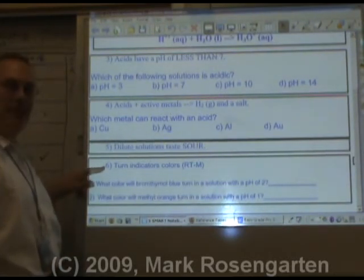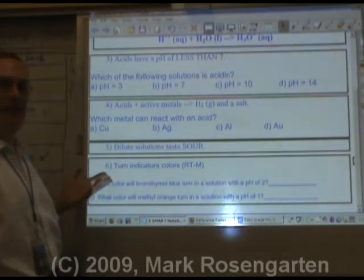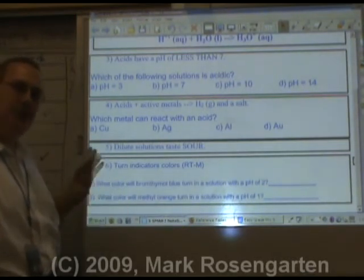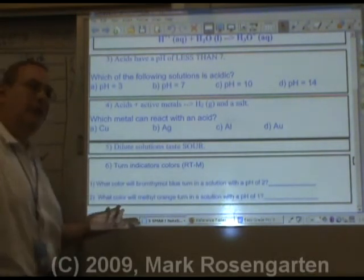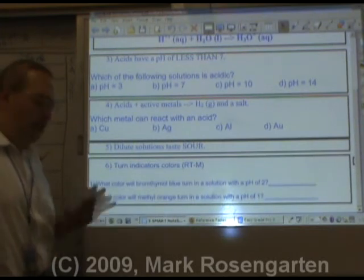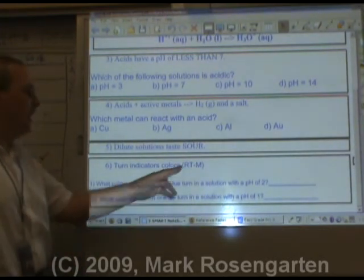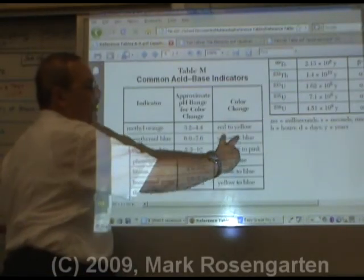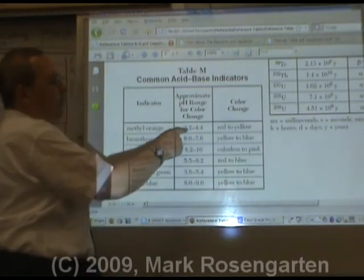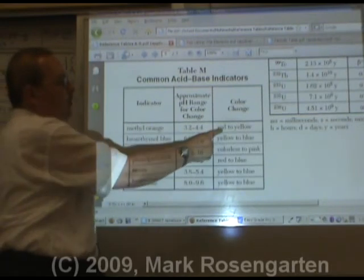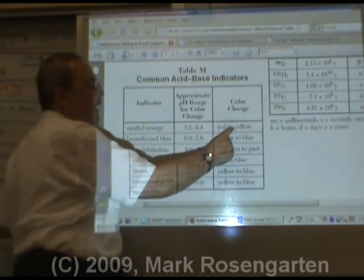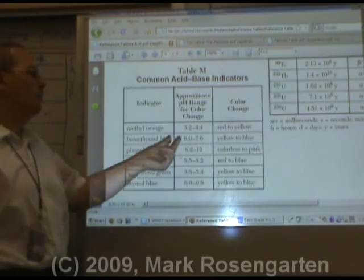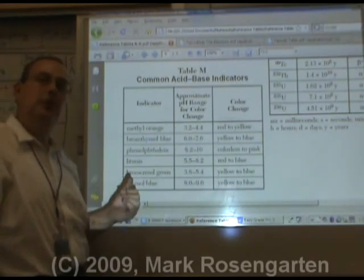Acids turn indicators color. Now indicators are chemicals that are color sensitive to certain pHs. Above a certain pH, they're one color. Below a certain pH, they're a different color. We can find them on reference table M. These numbers here and these colors here indicate from the lower value down, it's the first color. From the upper value up, it's the other color. In between the two values, it's an intermediate color.